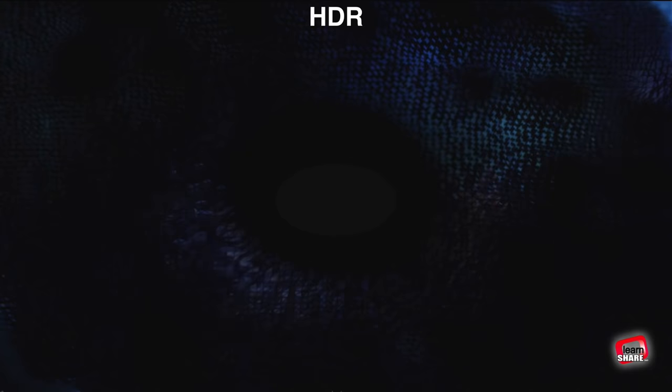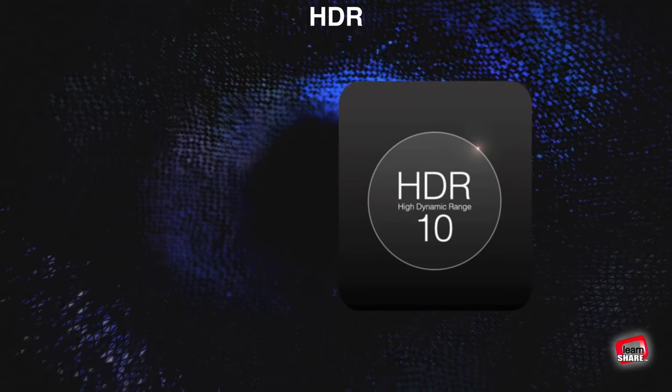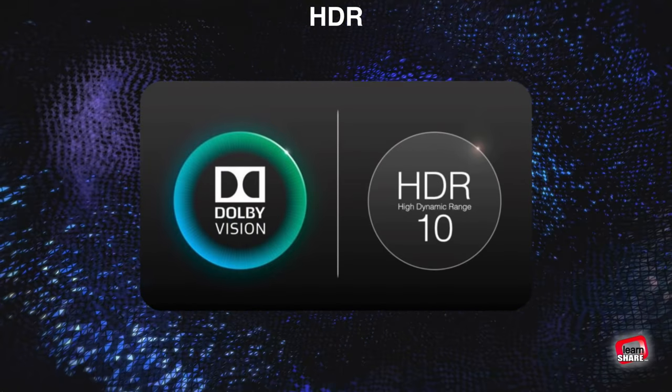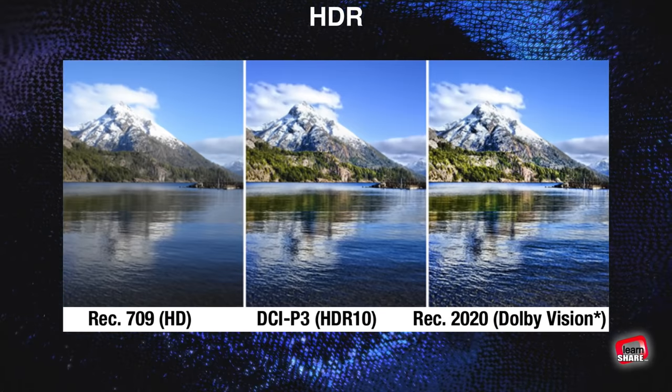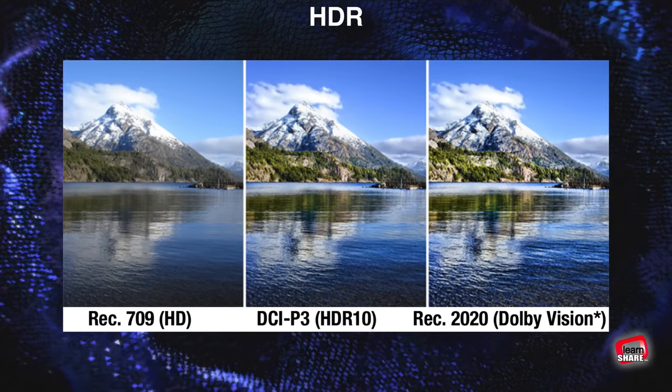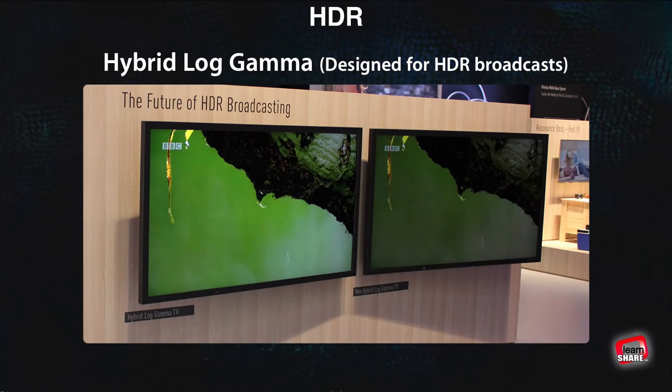Currently there are three types of HDR. HDR 10 is the industry standard and all TVs support it. Dolby Vision adds an extra layer of information that tells a TV how to render pictures on a scene by scene basis. Only some brands like LG, Vizio, TCL, and Sony support this. And there is also Hybrid Log Gamma that was designed for HDR broadcasts.